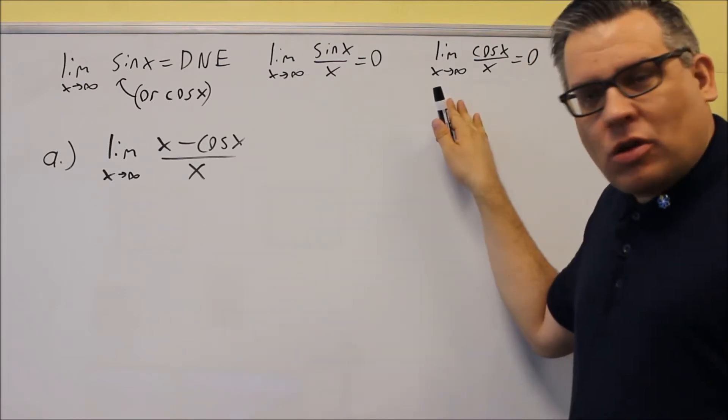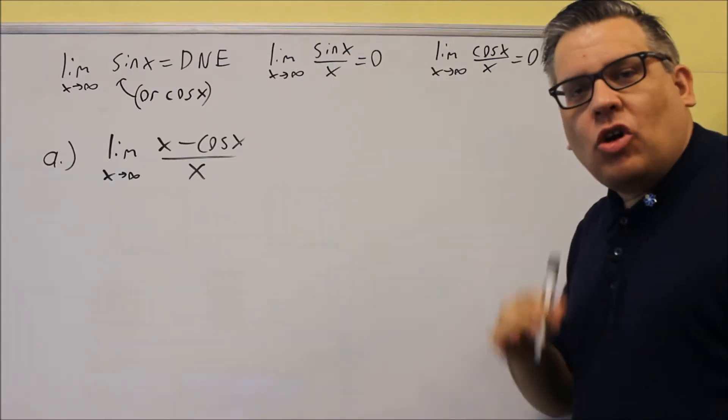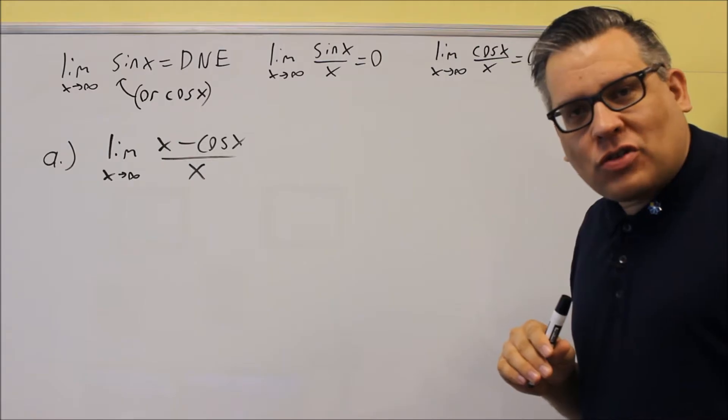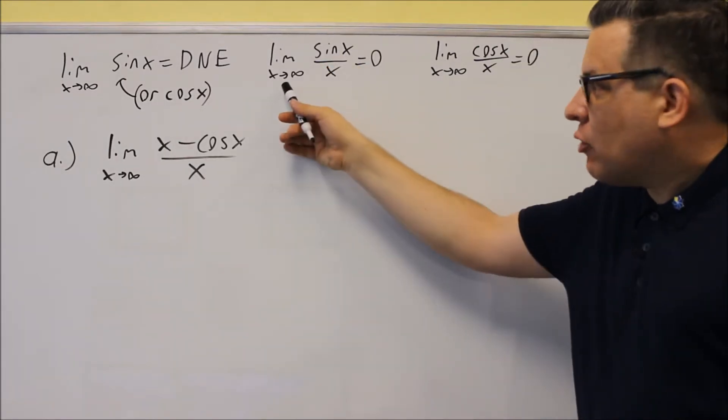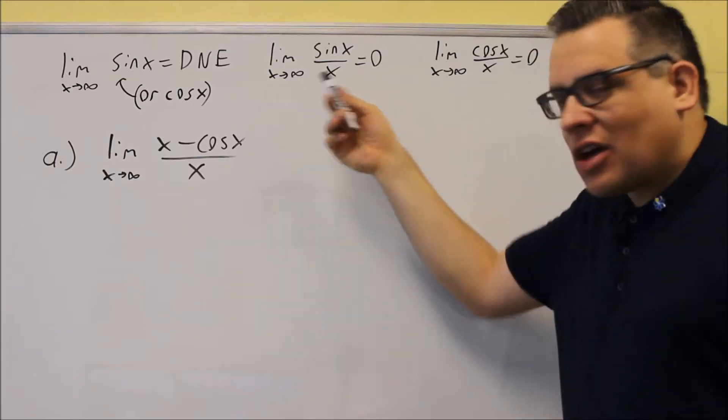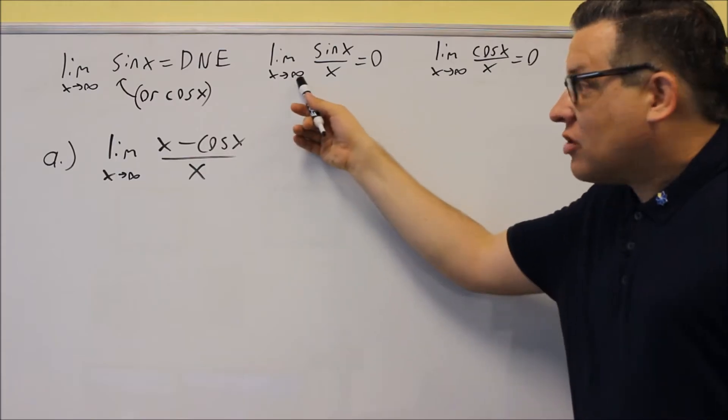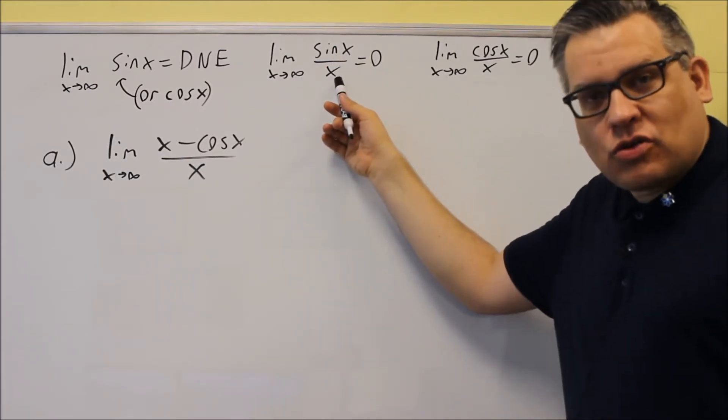Then we have these two special limits. Limit as x approaches infinity of sine x over x. Now, we have seen something similar to this before in a previous section, but remember that that sine x over x we talked about, that was x approaching 0. This is x approaching infinity, so that's why the answer is different. So if x approaches 0, sine x over x, that goes to 1.